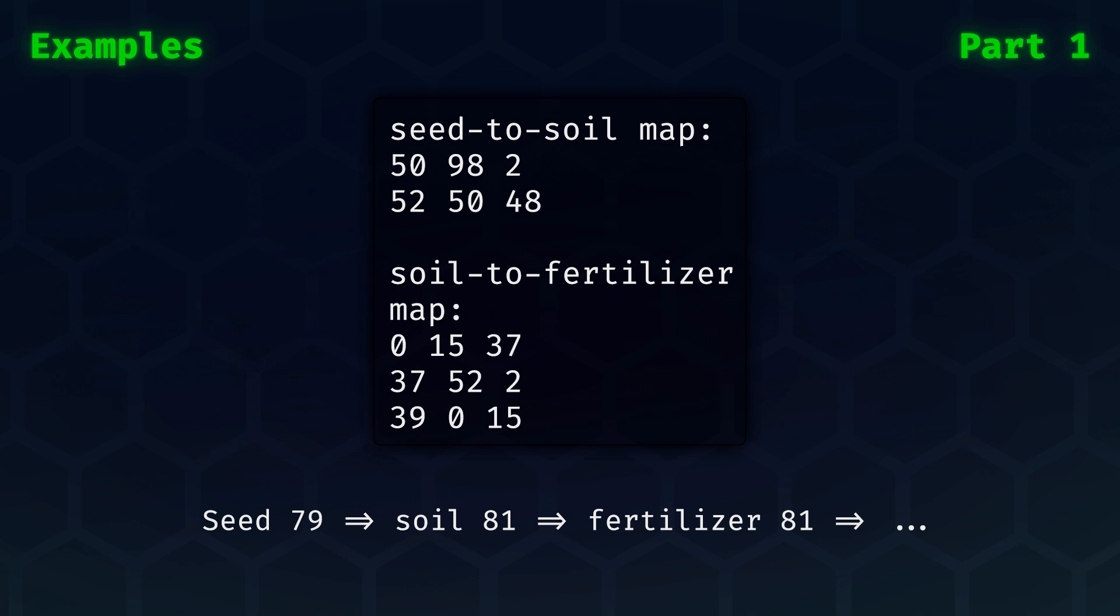Now, suppose we have seed 79, then we look in the seed-to-soil map, and we find that the second entry contains this number. The offset between 50 and 52 is 2, so 79 will map to 81. Then we move to the next map. We can see that soil-to-fertilizer map does not have any entry for 81, so the number stays the same.